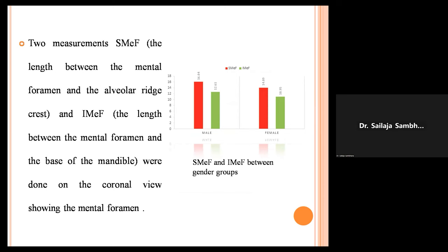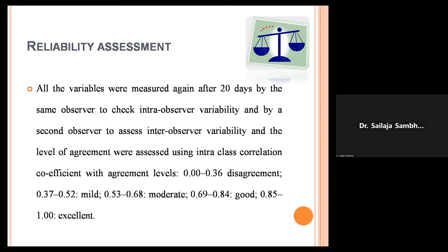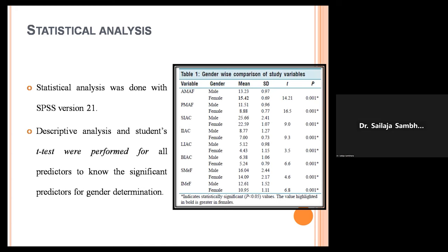For reliability assessment, all variables were measured again after 20 days to check intra-observer variability and by a second observer to assess inter-observer variability. The level of agreement was assessed using intra-class correlation coefficient. Statistical analysis was done with SPSS version 21. Descriptive analysis and Student's t-test were performed for all predictors to identify significant predictors for gender determination. The mean value for AMAF was higher in females, while all other values were higher in males.